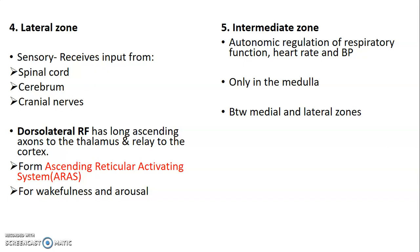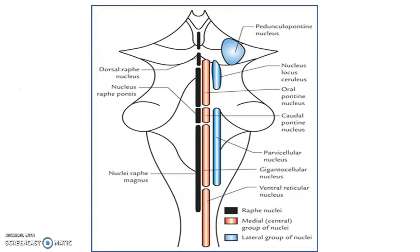The intermediate zone plays a role in autonomic regulation of respiratory function, heart rate, and blood pressure, and is located in the medulla between the medial and lateral zones. The lateral group includes the locus ceruleus nucleus and the parvocellular nucleus.